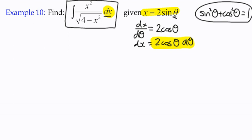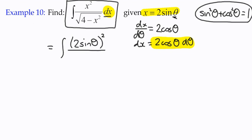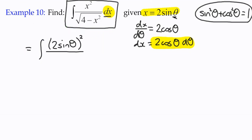The numerator x² is quite straightforward — it becomes (2sinθ)², which is 4sin²θ. We'll put this aside a bit because we're going to substitute dx with 2cosθ dθ.